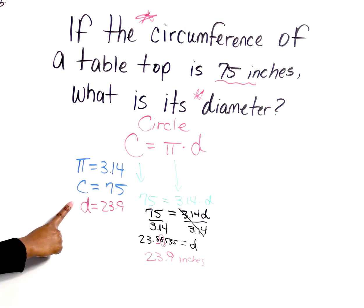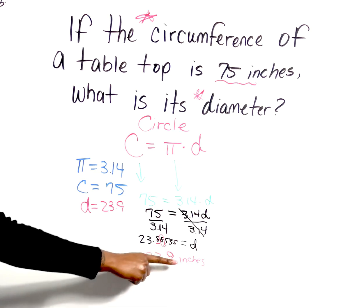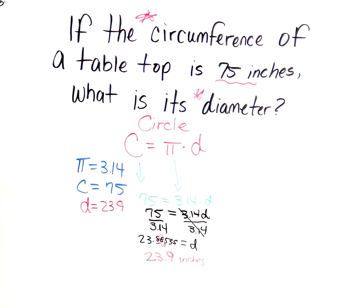So I make a list just so I can see what's being given and what we're looking for. I plug in my values, solve to get the variable by itself, and we ended with 23.9 inches.